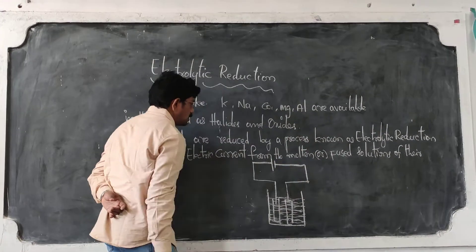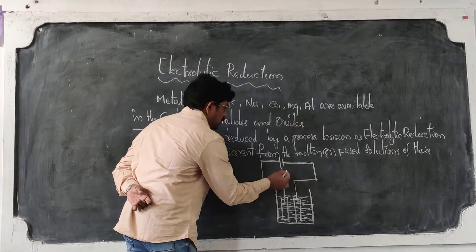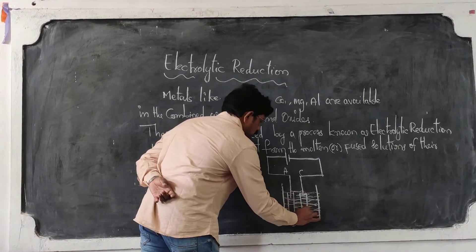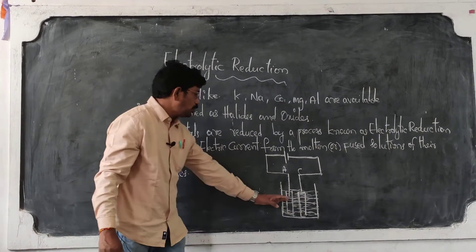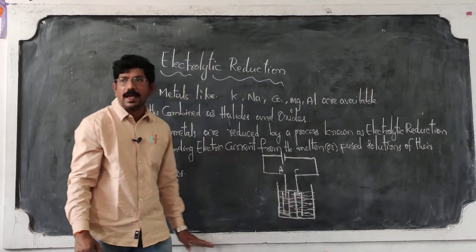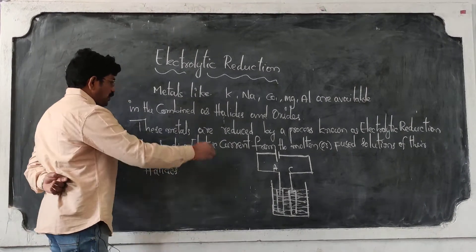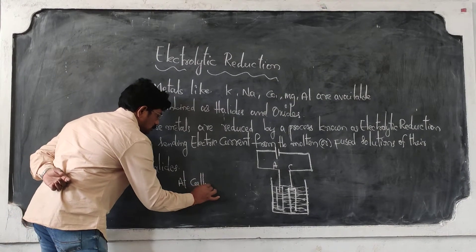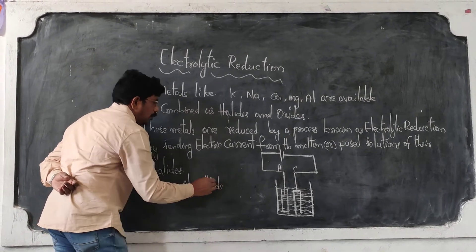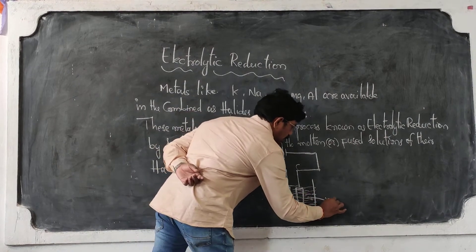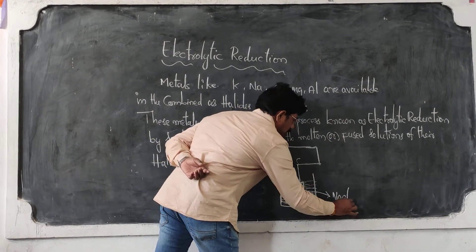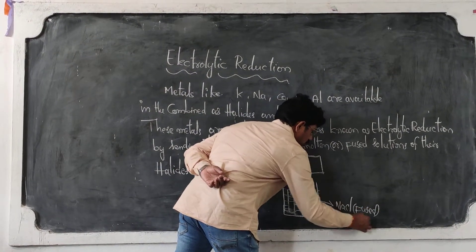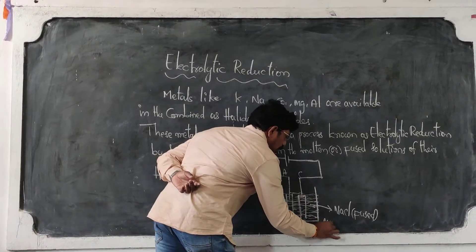We insert two electrodes — this one is the anode and this one is the cathode. When current passes through the fused solutions of these metal halides, reactions take place at the cathode. For example, taking sodium chloride in fused or molten form.